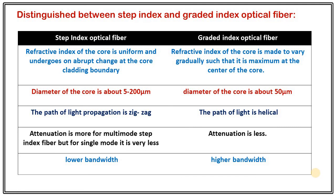Attenuation and pulse dispersion in step index fiber are more compared to graded index optical fiber. Having less attenuation is important because larger attenuation makes it difficult to send light signals over longer distances. So when minimizing attenuation and pulse dispersion is desired, graded index optical fiber is preferred over step index. Step index fiber also has lower bandwidth whereas graded index optical fiber has higher bandwidth. Despite graded index being more useful in many ways, step index is structurally simpler, making it preferable from a manufacturing standpoint.